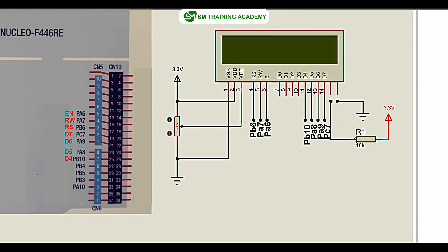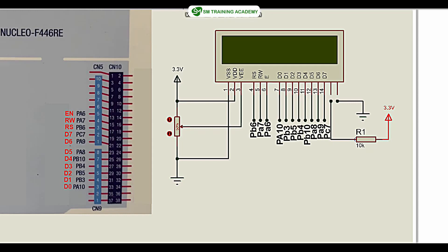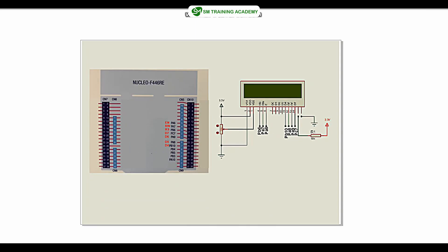Since we are neglecting data lines D0 to D3, this is called 4-bit data mode. Whatever data we send to the LCD through these data lines is passed in two steps: first we send the MSB 4 bits, then the LSB 4 bits. In this manner we use only these four data lines. This schematic will be built on breadboard, and then we will configure the microcontroller in STM32CubeMX software.